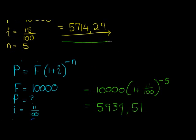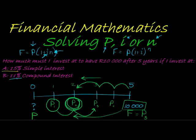So we see that with simple interest at 15% I need to invest 5,714 rand, whereas with compound interest at 11% I need to invest 5,934 rand. So this time it makes a difference — simple interest requires less investment. That illustrates very well how to calculate the present value. In the next video, we'll look at how to work out how much interest you must earn to reach a certain amount.